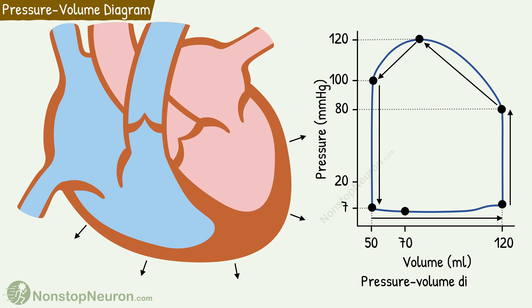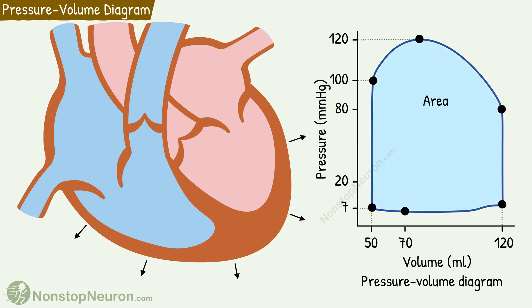So this is the pressure volume diagram, or pressure volume loop. The area covered by this loop represents the net external work output of the ventricle.